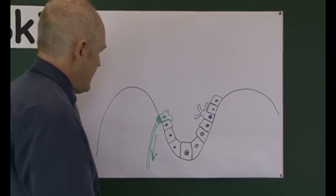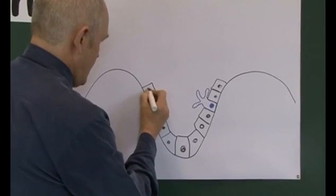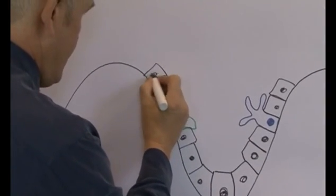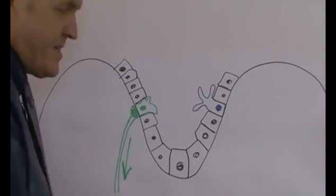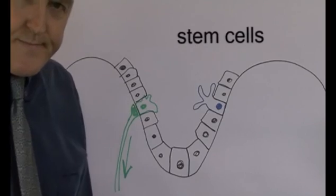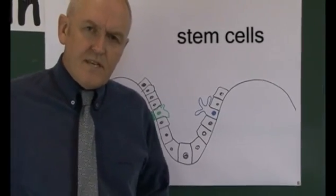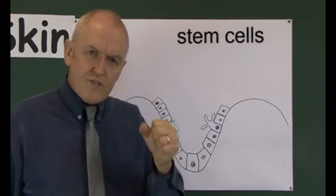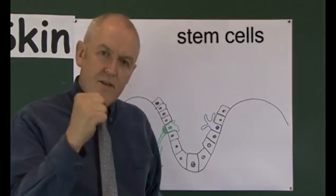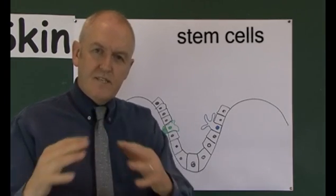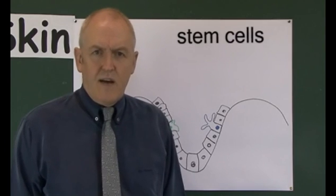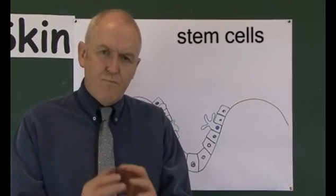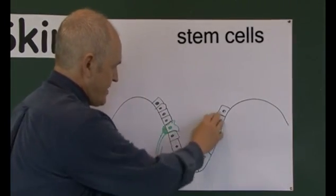So we've got keratinocytes dividing, Merkel cells, and melanocytes producing pigments, as well as other keratinocytes lining the basement membrane zone. Some of these keratinocytes are what we call stem cells. From time to time, one of the keratinocyte stem cells will divide and produce two cells — one will stay as a stem cell for next time, but the other will divide into two, each of those will divide again giving four, they'll divide again giving eight, then sixteen, producing a small population of new keratinocytes.